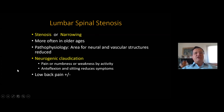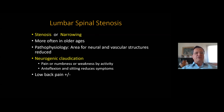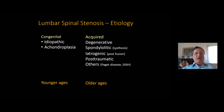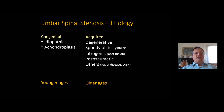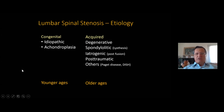Neurogenic claudication is the most common symptom of lumbar spinal stenosis. In some cases there may be low back pain. Mostly it is an acquired, degenerative disease, but there are some young age cases with idiopathic or achondroplastic congenital etiology.